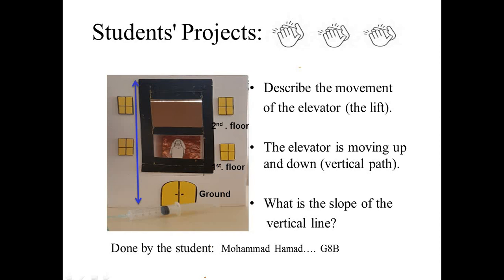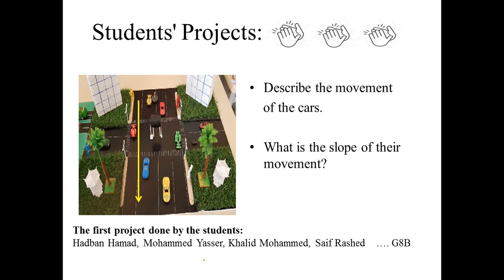The second amazing project is done by four students in grade 8B: Haban, Muhammad, Yasser, Khaled, and Rashed. You can see a nice road with cars — like a city scene. There is a straight horizontal line showing how cars move horizontally, not up and down. So what is the slope of a horizontal line? The slope is zero. Great job!